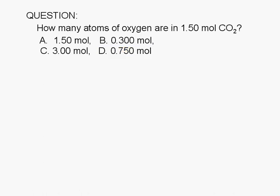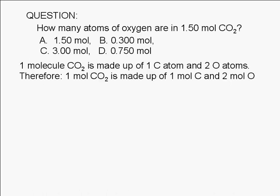Subscripts in a formula are also counting numbers. They tell us how many atoms of each element are present in a molecule. In the case of carbon dioxide, the formula CO2 tells us that a molecule of carbon dioxide is made up of one carbon atom and two oxygen atoms.